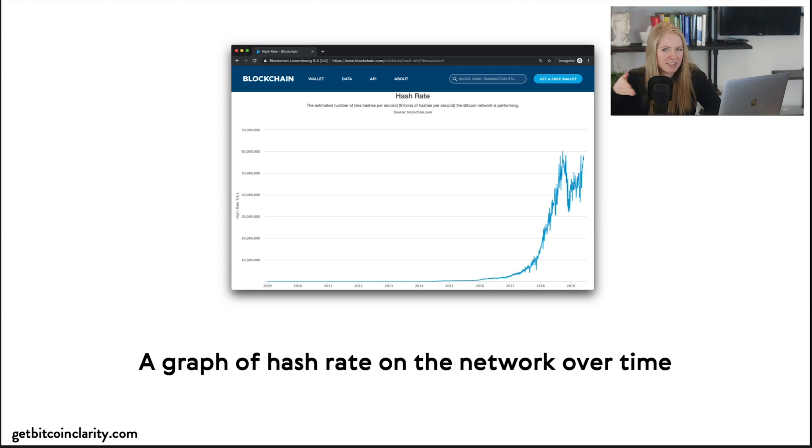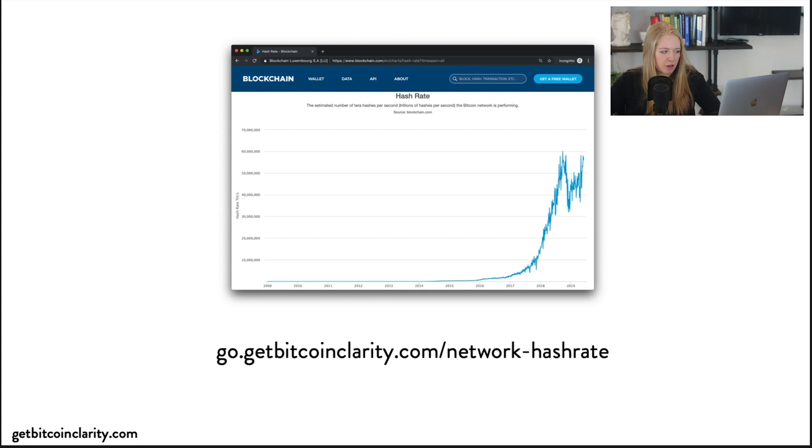On a daily level, hash rate fluctuates all the time. You'll see computers dropping on and off all the time, and that's totally normal. I created a short link for this, but this is just blockchain.info, so you can also go to this short link to see that same graph.